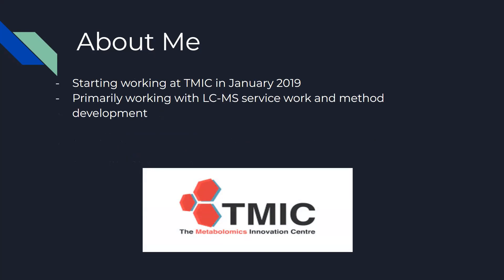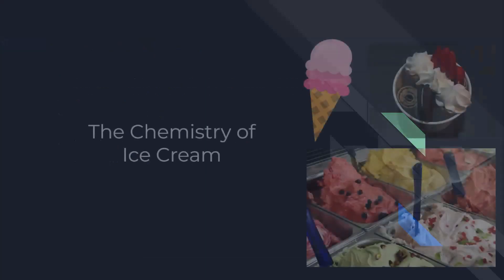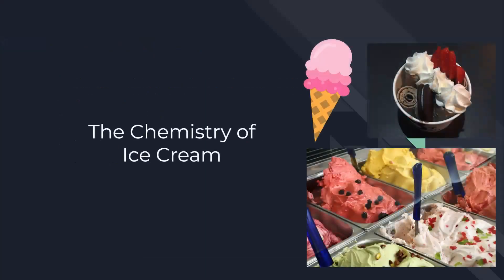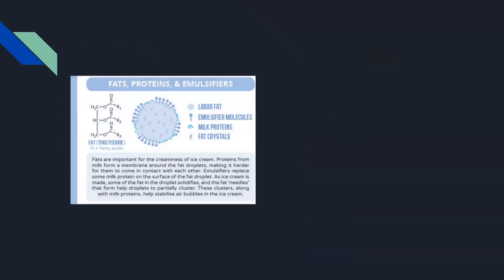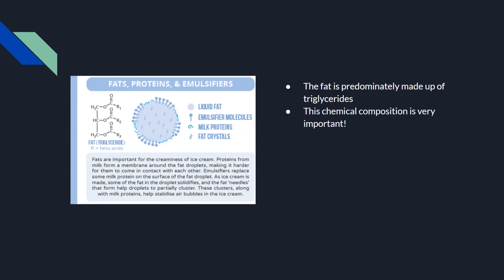For my presentation today, I'm going to be talking about the chemistry of ice cream. For ice cream, there are four main components. The biggest one is actually the fat coming from the cream. The type of fat used in ice cream is predominantly made up of triglycerides, and this chemical composition is extremely important — the fat content actually helps determine the melting point of the ice cream.